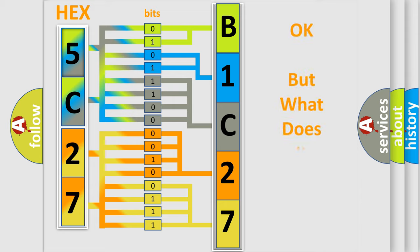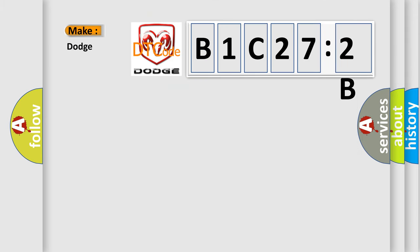The number itself does not make sense to us if we cannot assign information about what it actually expresses. So, what does the diagnostic trouble code B1C272B interpret specifically?